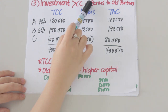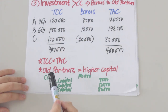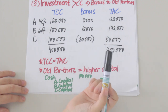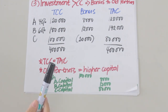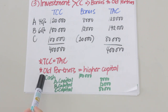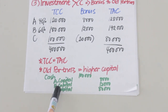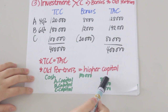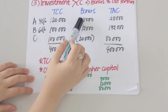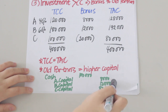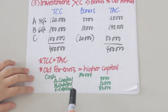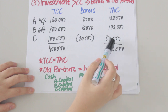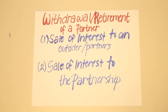When there is a bonus to old partners, the old partners receive an increase in their capital balances. To record C's admission, we debit cash for 100,000 and credit A capital for 8,000 (the bonus received), credit B capital for 12,000, and credit C capital for 80,000 — the capital credit granted to him.